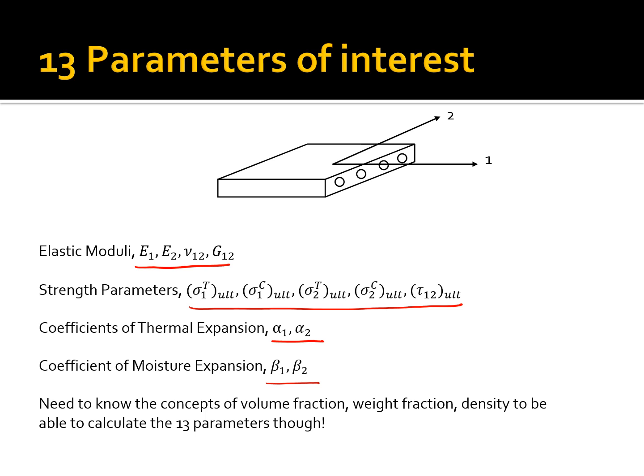So we have to somehow find these. Now surely we can conduct experiments to find out these 13 parameters, but that can become quite expensive because we may have a different amount of fiber, different amount of matrix, different kinds of fibers.